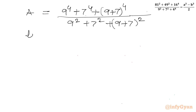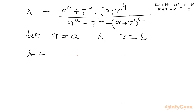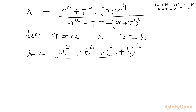Let us consider: let 9 = a and 7 = b. Then A will be equal to (a⁴ + b⁴ + (a+b)⁴) divided by (a² + b² + (a+b)²).